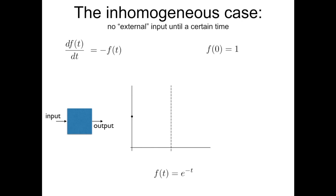Let me now look at the same system in a slightly different way. I'm considering a so-called piecewise constant input. The input is 0 until one point in time, represented by a dashed line, and then after that I will switch on something — some input will arrive. It was 0, and it will change abruptly. Let me run the video and show it to you.